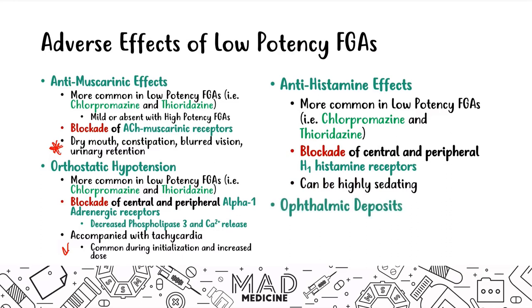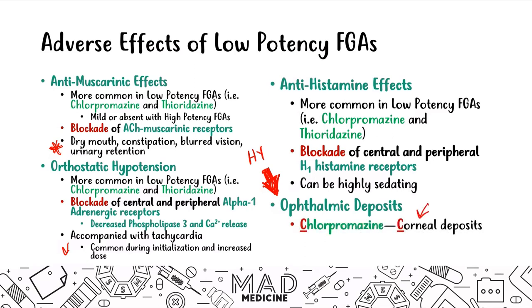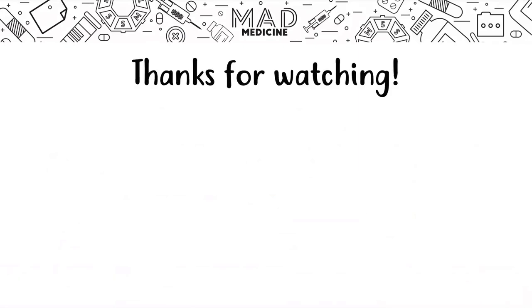Finally, a high-yield adverse effect of low-potency first-gen drugs is ophthalmic deposits. These differ between the two drugs: chlorpromazine causes corneal deposits, and thioridazine causes retinal deposits. A helpful mnemonic: the 'C' in chlorpromazine corresponds to 'C' in cornea, and the 'T' in thioridazine corresponds to 'T' in retinal.